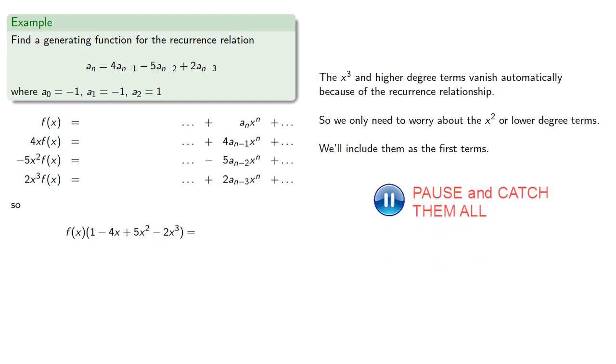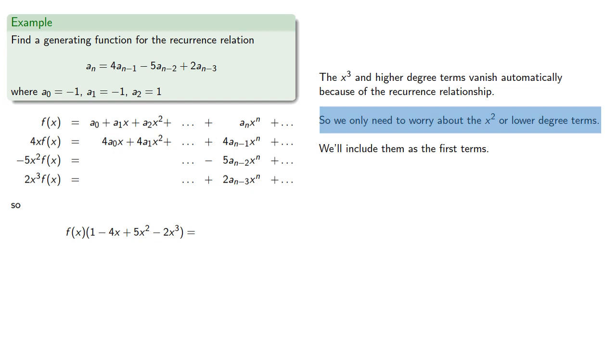In f(x) they are..., in 4xf(x) they are..., where again we only need to worry about the x squared or lower degree terms. And likewise for minus 5x squared and 2x cubed f(x), our first terms up to the square term will be...